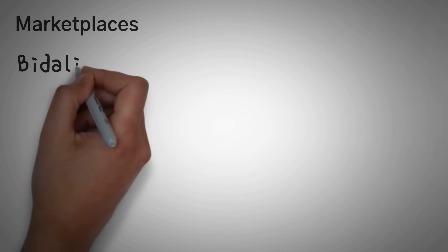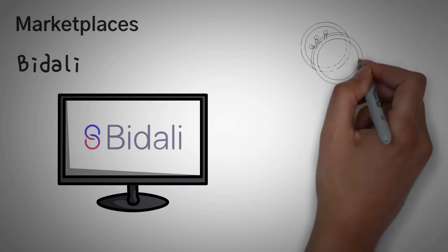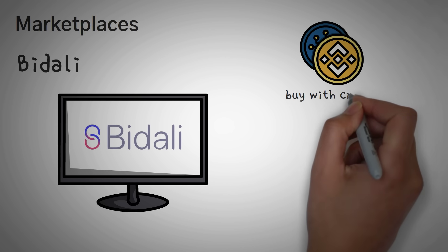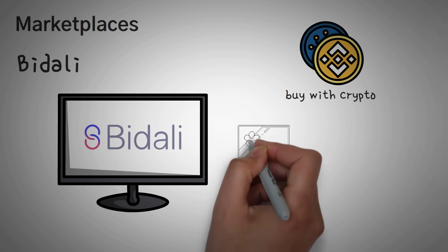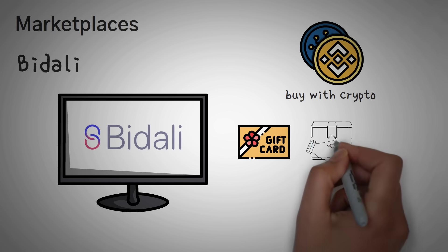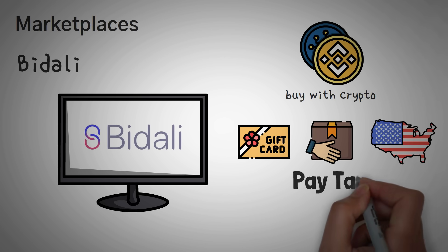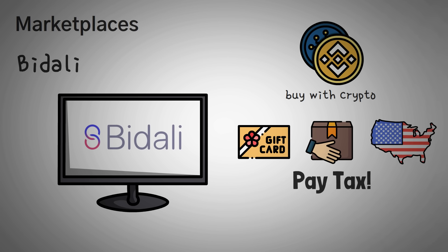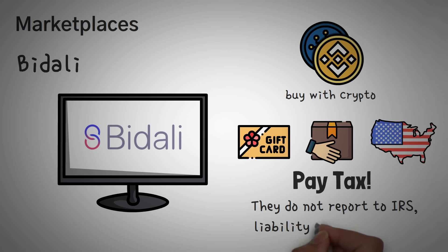Lastly, as an example of a marketplace dApp, we have Bedali. Bedali is a decentralized application that allows you to buy things using your crypto. One of their main products is gift cards, which can be delivered anonymously and very quickly. Remember, whenever you buy stuff with crypto, in the United States at least, it is currently reported as a sale, and because of that you have to pay taxes. Although Bedali does not report to the IRS, so the liability is in your hands.